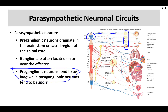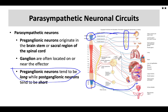There are no parasympathetic neurons in the thoracic or lumbar regions — they originate from the brainstem or from S2, S3, and S4. These long preganglionic neurons travel to the target tissue and synapse with short postganglionic neurons. The ganglion is located right next to the target organ, sometimes appearing as a tiny ganglion immediately adjacent to the effector. This is the key structural difference between parasympathetic and sympathetic neuronal circuits.